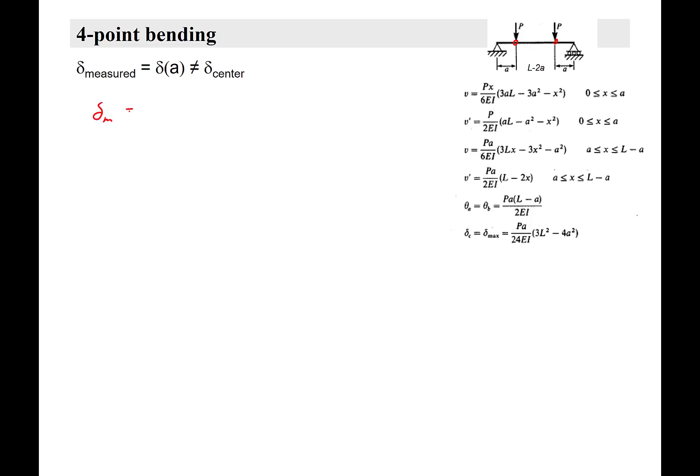So the measured displacement is equal to V at point A where the anvils are, and by this equation here, which you can get in the back of any stress analysis textbook—these are cut and paste from Timoshenko's book—just rewriting that equation, replacing the X with A, the location of the anvil on the left. In that case, we get this equation here.